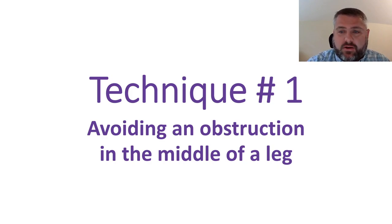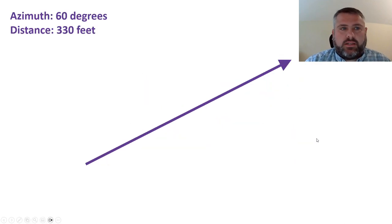In this first technique we'll focus on how to avoid some sort of obstruction if it's in the middle of one of the legs of your traverse. Let's say you've been given an azimuth of 60 degrees that you're pacing along. The distance of this leg is 330 feet.